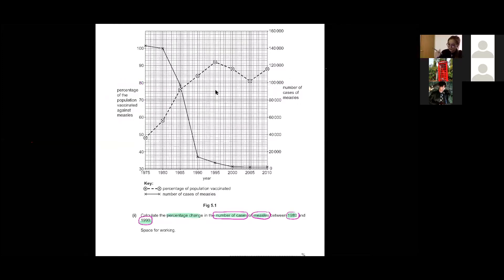Look carefully at the key. So you want to find this. Now 1980, so it will be here. What is this value? Here, 140,000. Okay, 1990, 14,000.